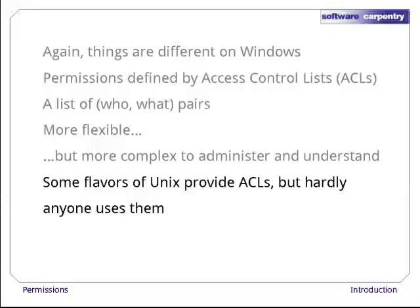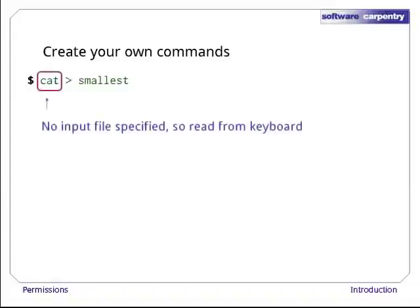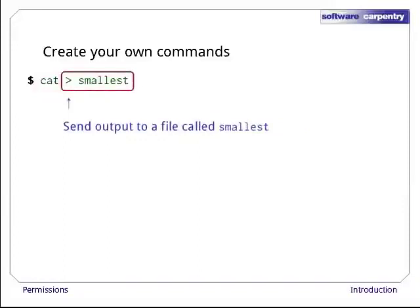Now that we understand how permissions work, it's time to start creating our own programs. Let's start by running cat > smallest. Since we didn't specify an input file, cat will read from the keyboard, i.e., its input will be whatever we type. And since we put > smallest at the end of the command, the computer will send cat's output to a file called smallest. This command will copy whatever we type into a file called smallest — it's like a text editor, but without the most useful bits.